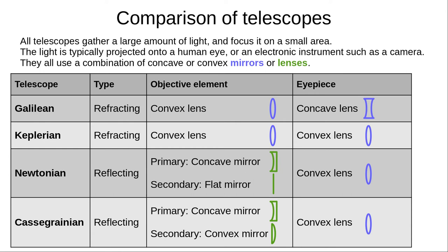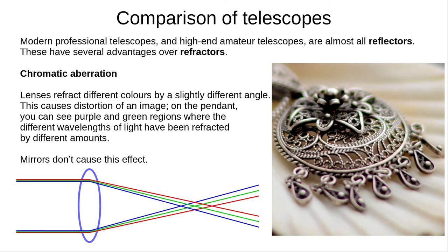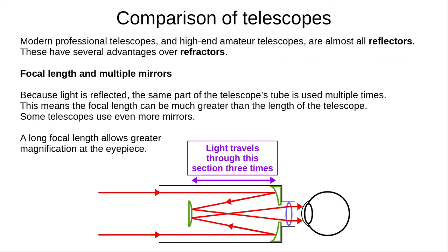Here we can see a summary and comparison of these four telescope designs. Remember, they all gather a large amount of light and focus it onto a small area, usually a human eye or an electronic instrument such as a camera. Almost all modern professional and high-end amateur telescopes are reflectors, as these have significant advantages over refractors. Lenses refract different colours by slightly different angles, causing a distortion called chromatic aberration — you can see purple and green regions in the photo where the lens has refracted different wavelengths by different amounts. Mirrors reflect all wavelengths at the same angle, preventing this effect. By using multiple mirrors we can use the same part of the telescope's tube multiple times; in the Cassegrain example, light passes through one part of the telescope three times, allowing a primary mirror with a longer focal length and greater magnification.